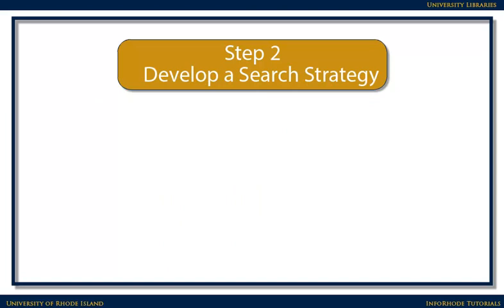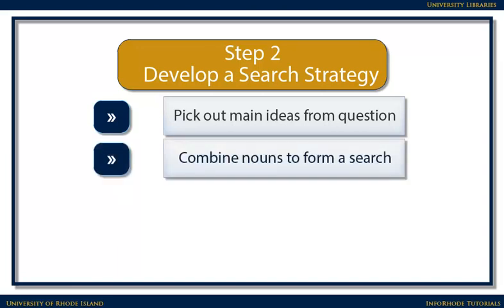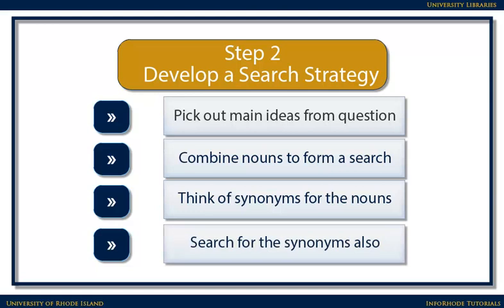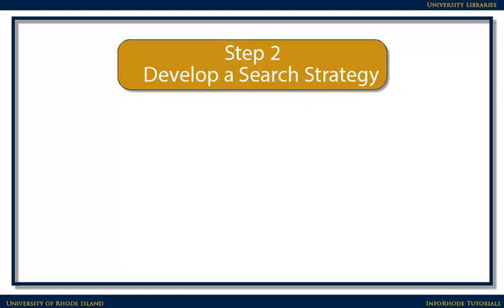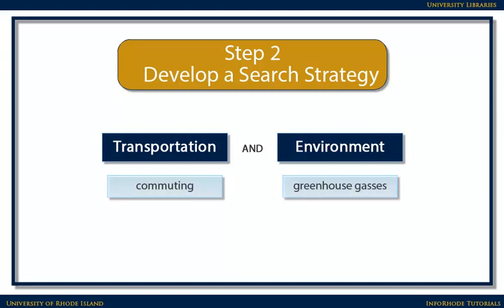Step 2: Develop a search strategy. In essence, to develop a good search strategy, pick out the nouns from your research question that most describe your topic. To get started, use those nouns and combine them to begin your search. It's also helpful to think about synonyms for those nouns and use those for searching as well. If we started by searching for transportation and environment, we may also want to create searches that include synonyms for our nouns — for example, commuting and greenhouse gases, or travel and ecology.